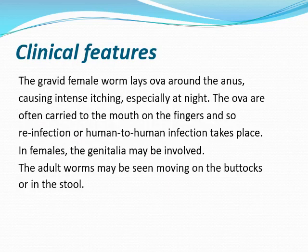The female worm lays eggs around the anus causing intense itching especially at night. The ova are often carried to the mouth on the fingers, so reinfection or human-to-human infection takes place - a person can have reinfection again by the same type, either auto-infection or human-to-human infection.